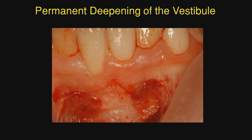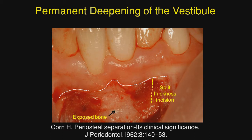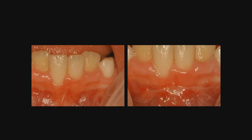The technique was modified by Dr. Herman Korn to achieve permanent deepening of the vestibule. An incision is made at the mucogingival junction, then a split-thickness flap is raised for a minimum of 5 millimeters. The key is that bone is exposed in the apical area — when bone is exposed, this will scar in and produce permanent vestibular deepening. Korn presented this technique in 1962 and referred to it as periosteal separation with fenestration, the fenestration being the exposing of bone. Here we see the pre-op view and then the post-op view showing the apical scar and the deepened vestibule.